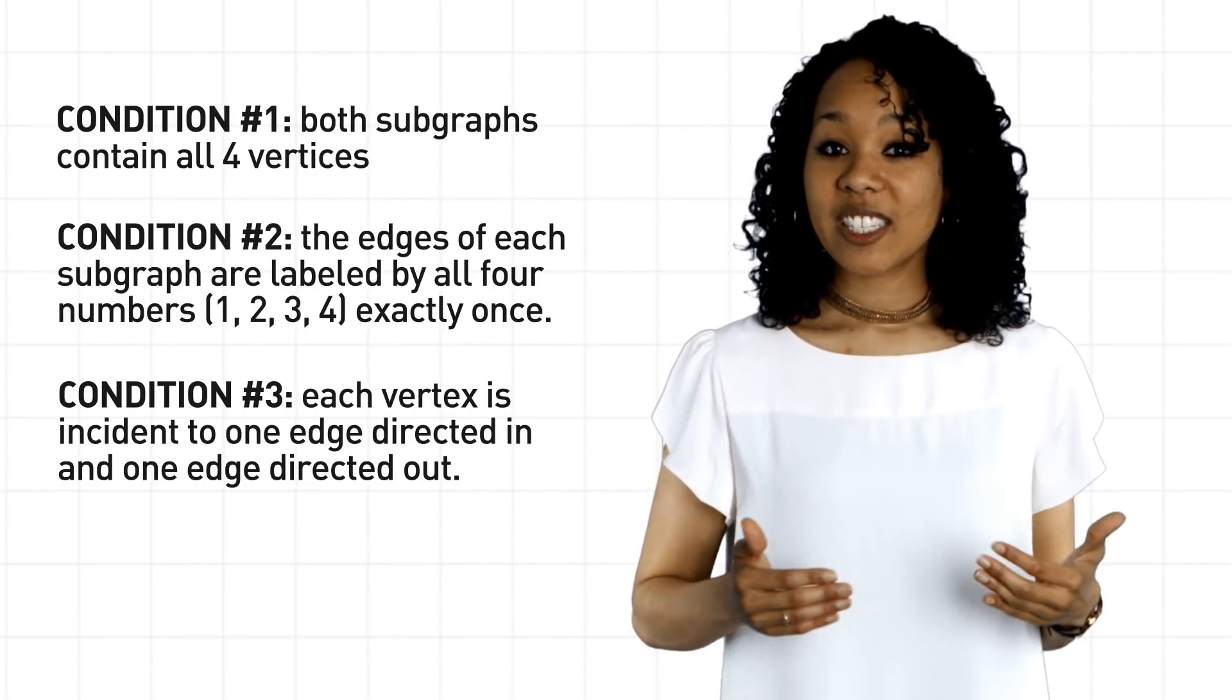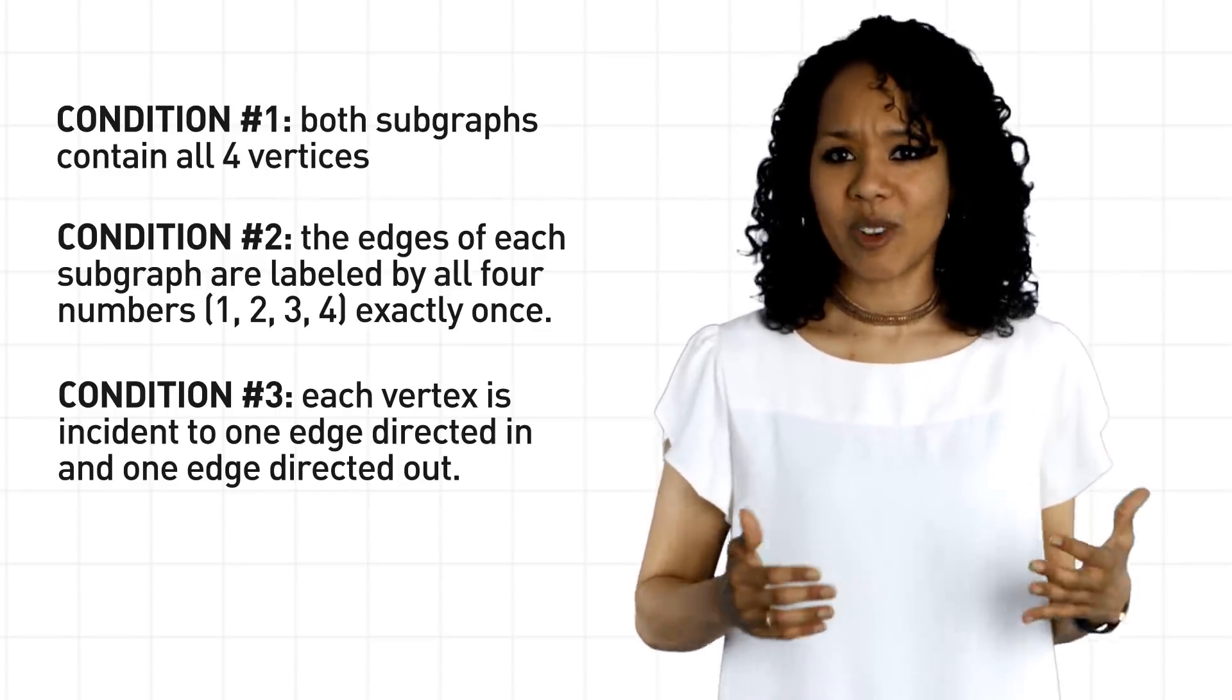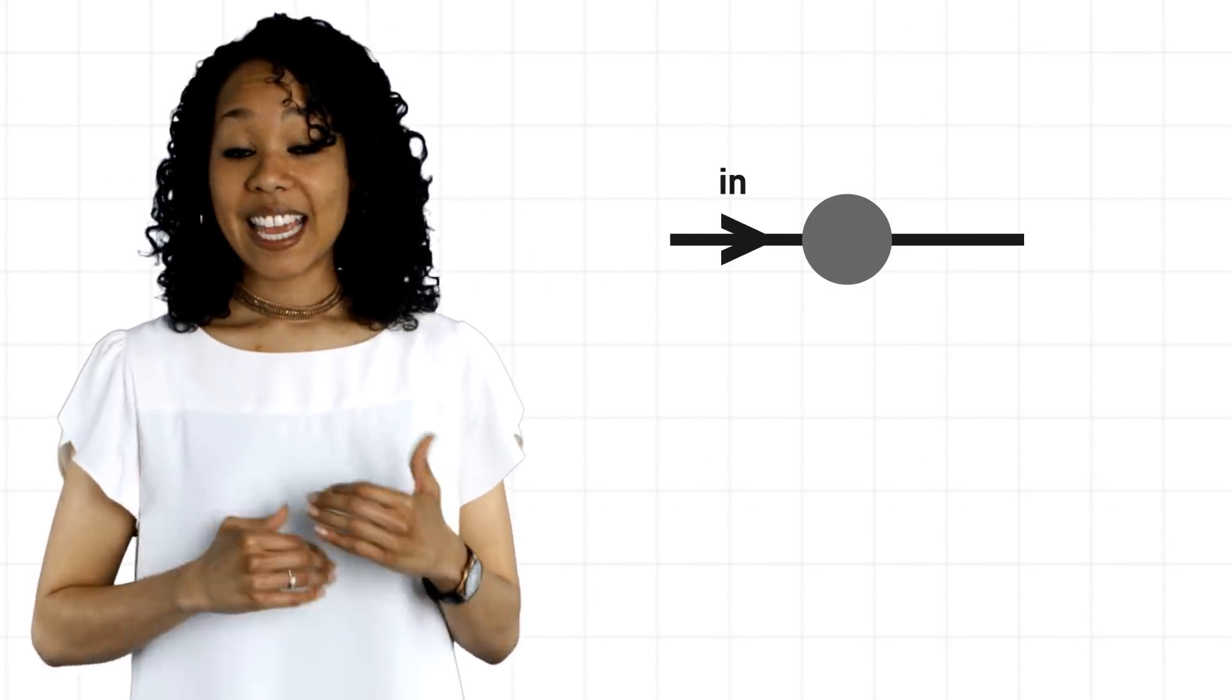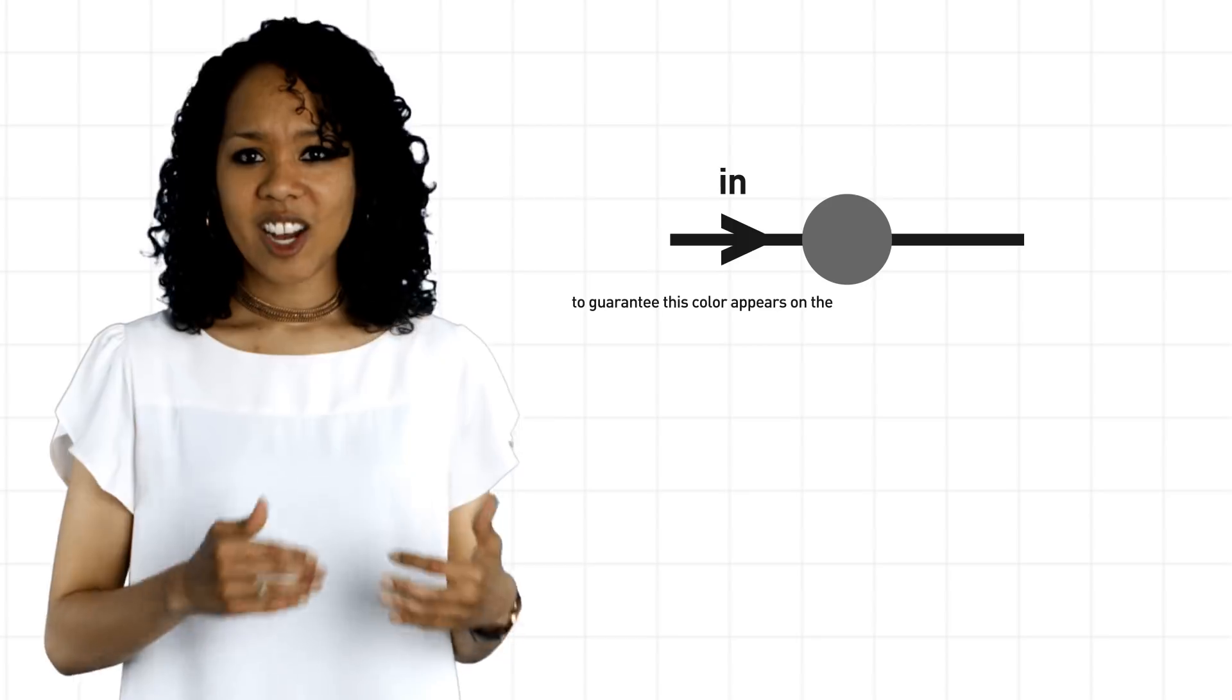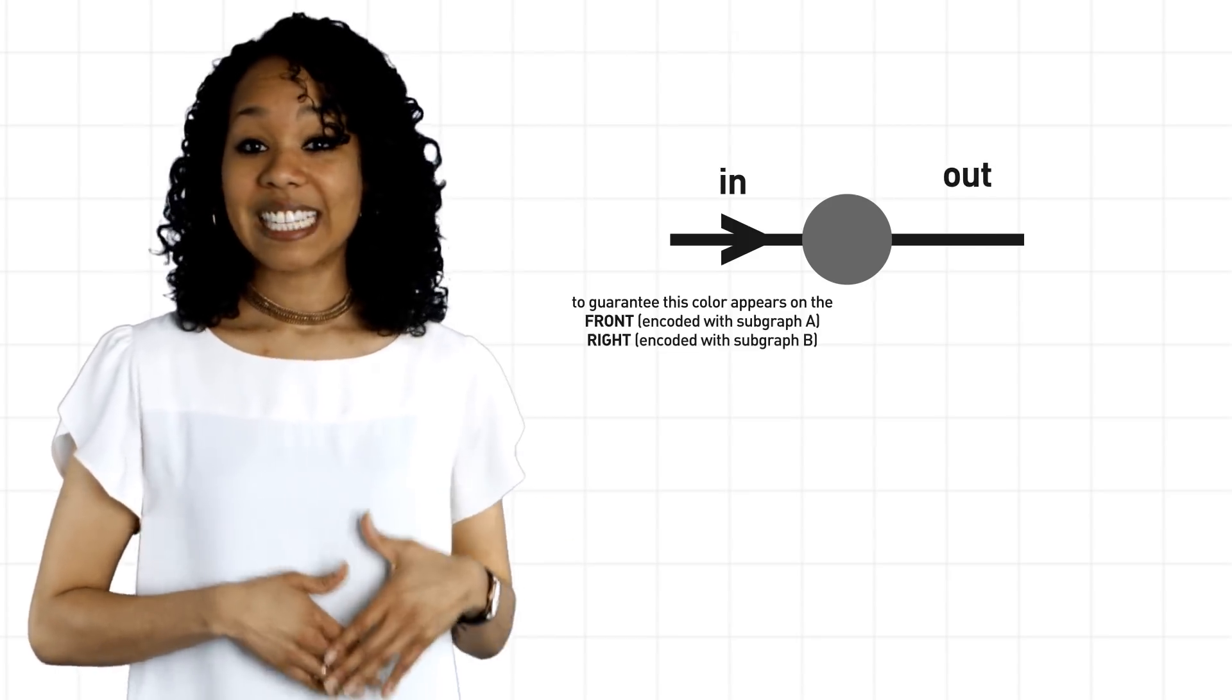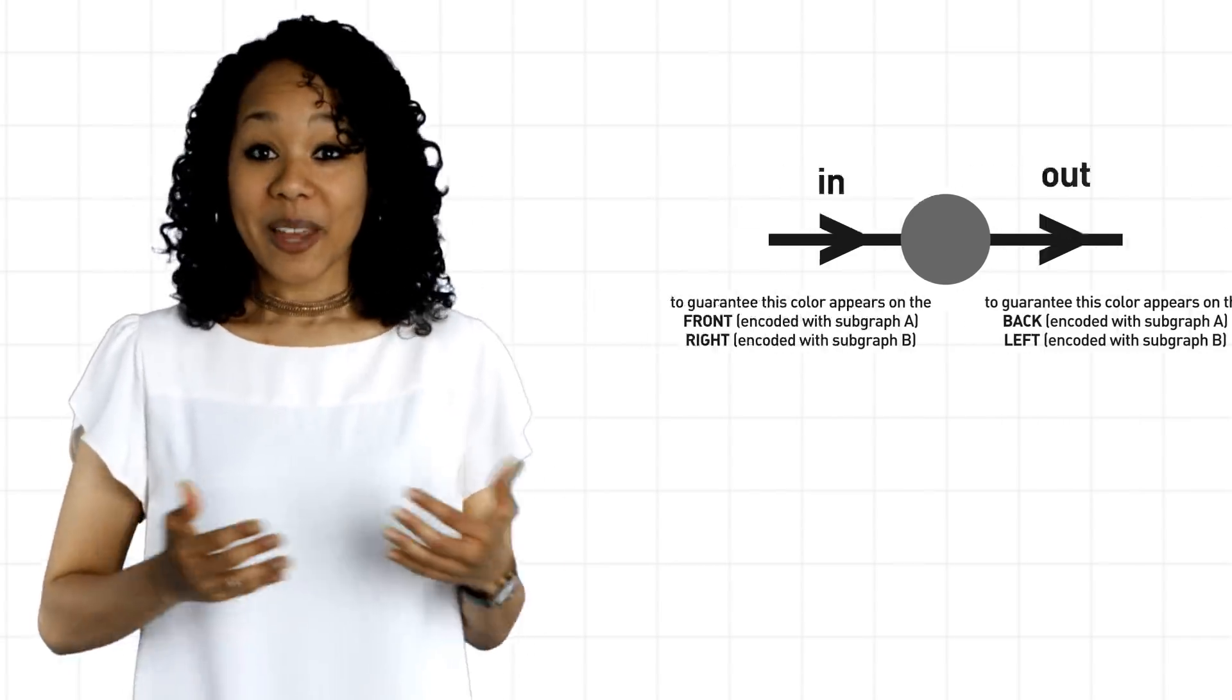So, to get around these problems, here is condition number three. In both subgraphs, each vertex must have exactly two edges incident to it, or sticking out of it. Moreover, one of those edges should be directed in to guarantee that that color appears on the front and right, and the other edge should be directed out to guarantee that that color appears on the back and left. And okay, this seems like it should solve the puzzle. But before we get too excited, let me just point out one last condition.